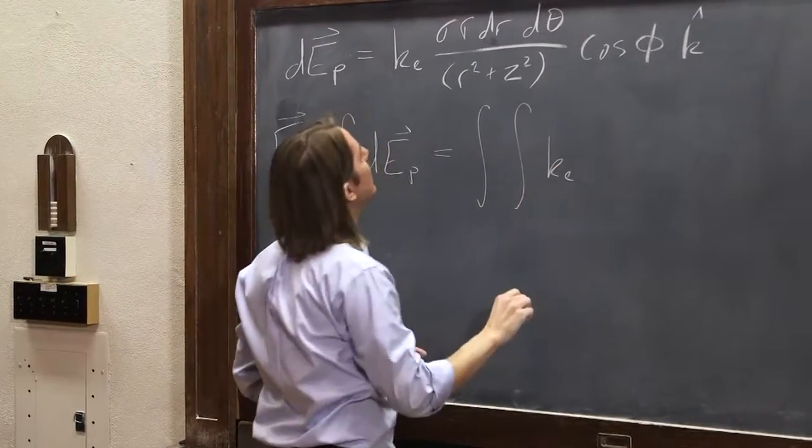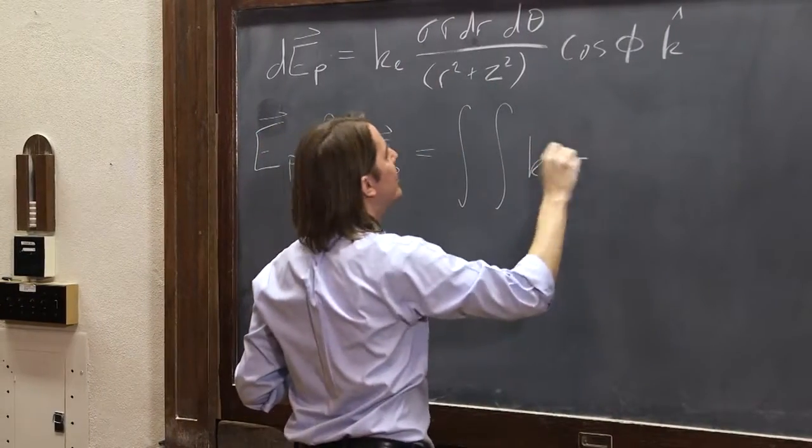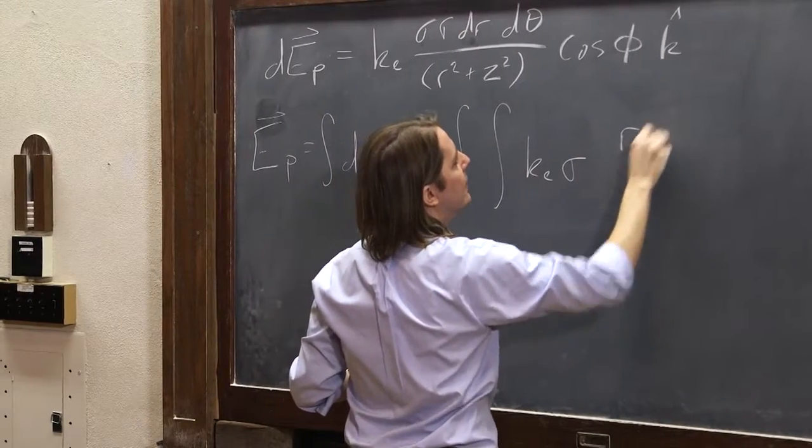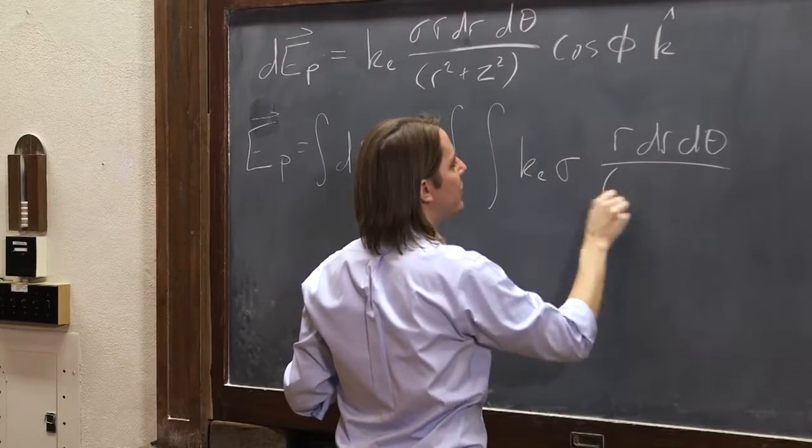We have KE. I'm going to start pulling some constants out. Sigma is here, and then this is r dr d theta. And this is r squared plus z squared.